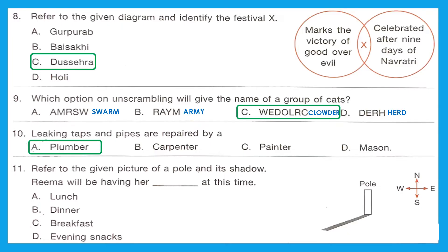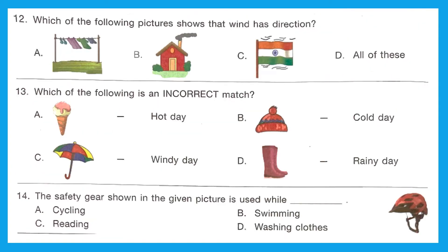Question 11: Refer to the given picture of a pole and its shadow. Rima will be having her dash at this time. The shadow is towards the left side of the pole, which is towards the west side. When the shadow falls towards the west, it is mostly morning time, and in the morning we take breakfast. Option C, breakfast, is the right answer.